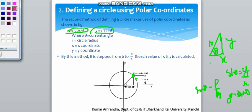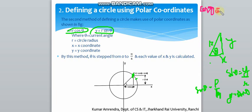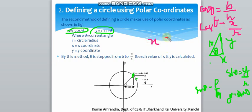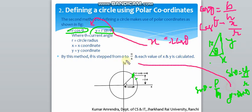cosθ equals base by hypotenuse, so x = r cosθ. And y = r sinθ. Here θ is the current angle, r is the radius, x is the x-coordinate, and y is the y-coordinate. By this method, θ is stepped from 0 to π/4 (45 degrees), and we calculate x and y to determine all the octants very easily.